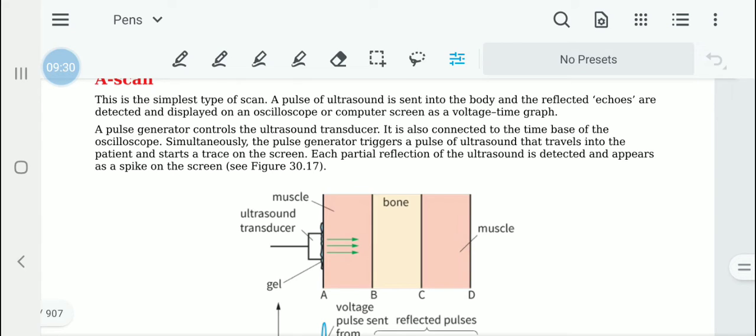A pulse of ultrasound is sent into the body and the reflected echoes are detected and displayed on an oscilloscope or a computer screen as a voltage time graph.